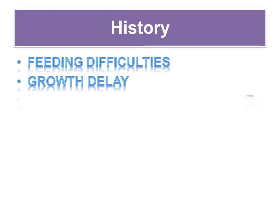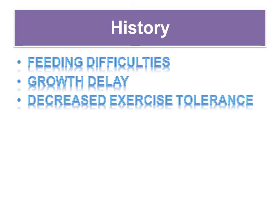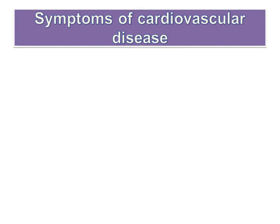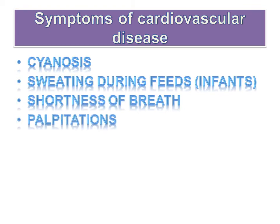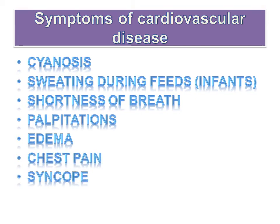A well taken pediatric history is an essential beginning to a cardiovascular assessment. Begin with the general health of the child including feeding difficulty, growth delay and decreased exercise tolerance. In the older child, ask the parent to compare the child to peers of the same age — it can help in this assessment. Symptoms that can indicate cardiovascular disease may include periods of cyanosis, sweating, shortness of breath, palpitations and edema, as well as chest pain and syncope.